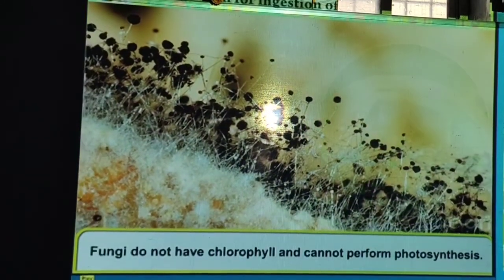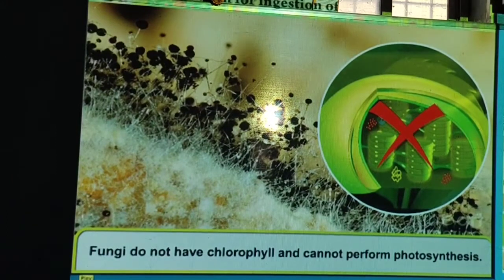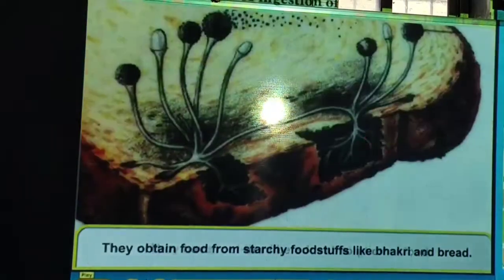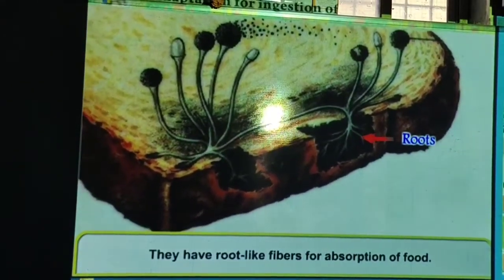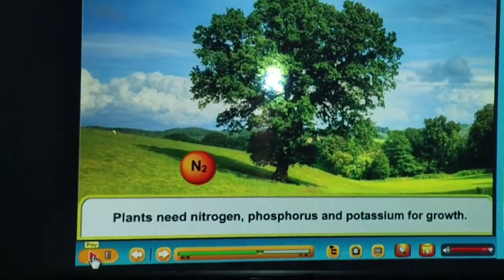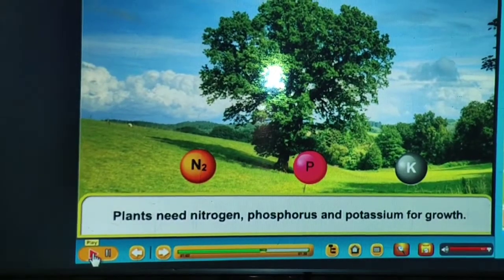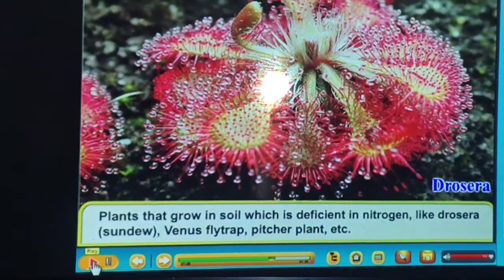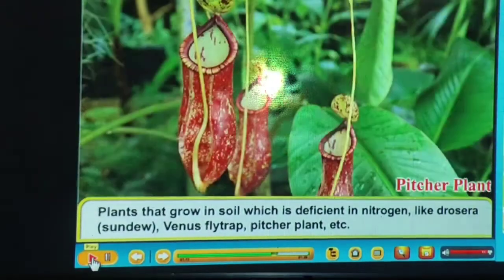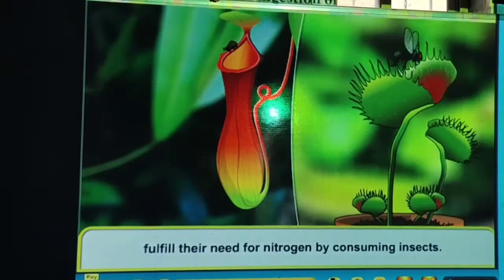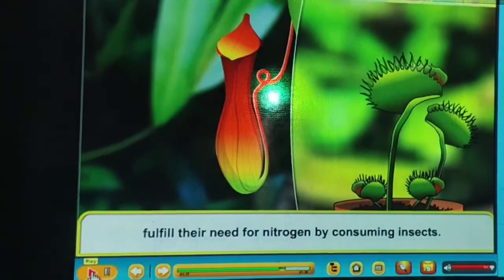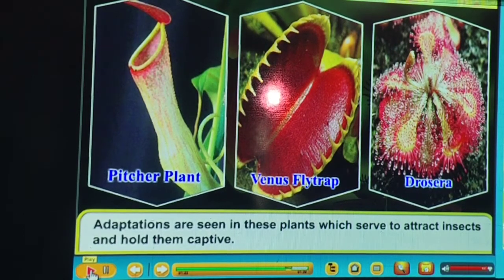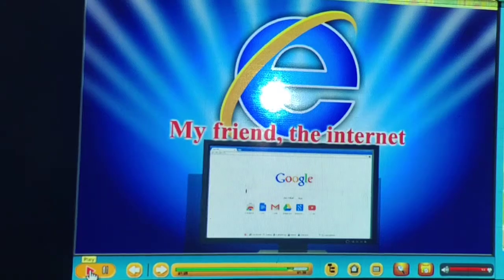Fungi do not have chlorophyll and cannot perform photosynthesis. They absorb food from starchy foodstuffs like bhakri and bread. Fungus belongs to the plant kingdom but does not take part in photosynthesis. Plants that grow in soil deficient in nitrogen — like Drosera (sundew), Venus flytrap, pitcher plant, etc. — fulfill their need for nitrogen by consuming insects. These are called insectivorous plants.